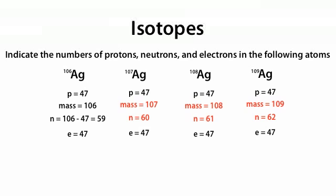When we look at this all together, we see four different versions of silver atoms. They all have the same number of protons — 47 — and the same number of electrons — 47 — but they have different numbers of neutrons. The fact that these four versions of silver have different numbers of neutrons makes them four isotopes of silver. If we have different versions of the same element with different numbers of neutrons, we call those isotopes of that element.